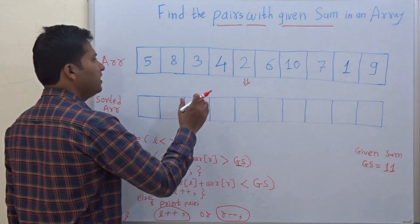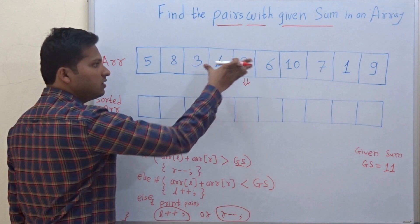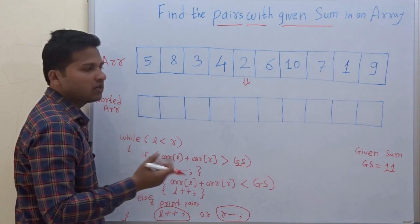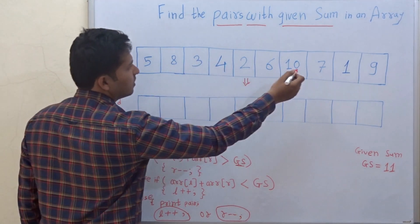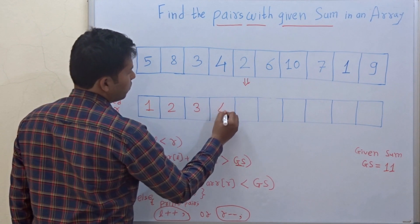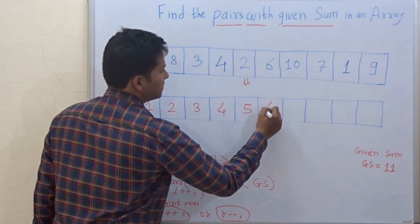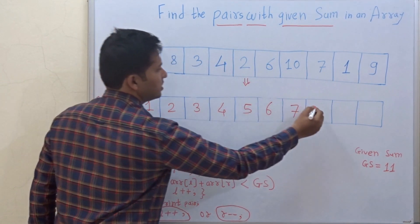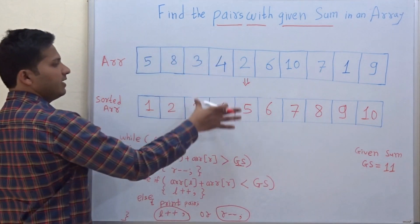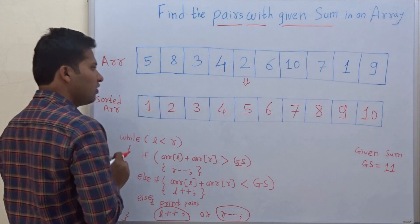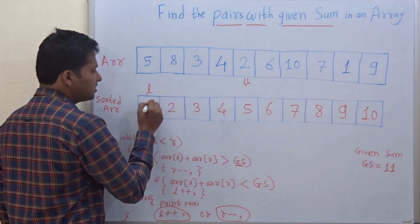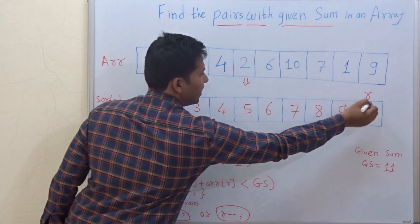For finding out the pairs with the given sum, you first have to sort this array, either by using quick sort, merge sort, or any other sort that you are comfortable with. So sort the array. The sorted array is 1, 2, 3, 4, 5, 6, 7, 8, 9, and 10. Now in this sorted array you have to initialize two variables: L to the starting of the array and R to the end of the array.